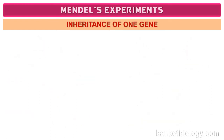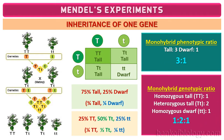Now let us analyze the F2 result. Of the four combinations, three are tall phenotype and one is dwarf phenotype, so the ratio is 3:1. This is called the monohybrid phenotypic ratio. In percentage, 75% tall and 25% dwarf, or in fractions, three-fourths tall and one-fourth dwarf. For example, if 100 plants are produced in F2, approximately 75 would be tall and 25 would be dwarf, though slight variations like 73 tall and 27 dwarf are also acceptable and still represent a 3:1 ratio.